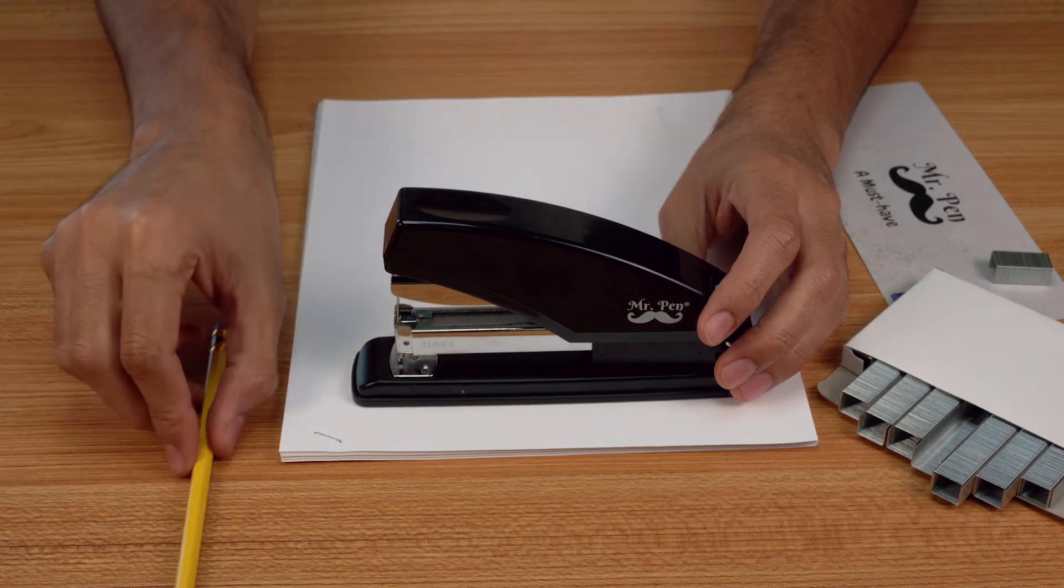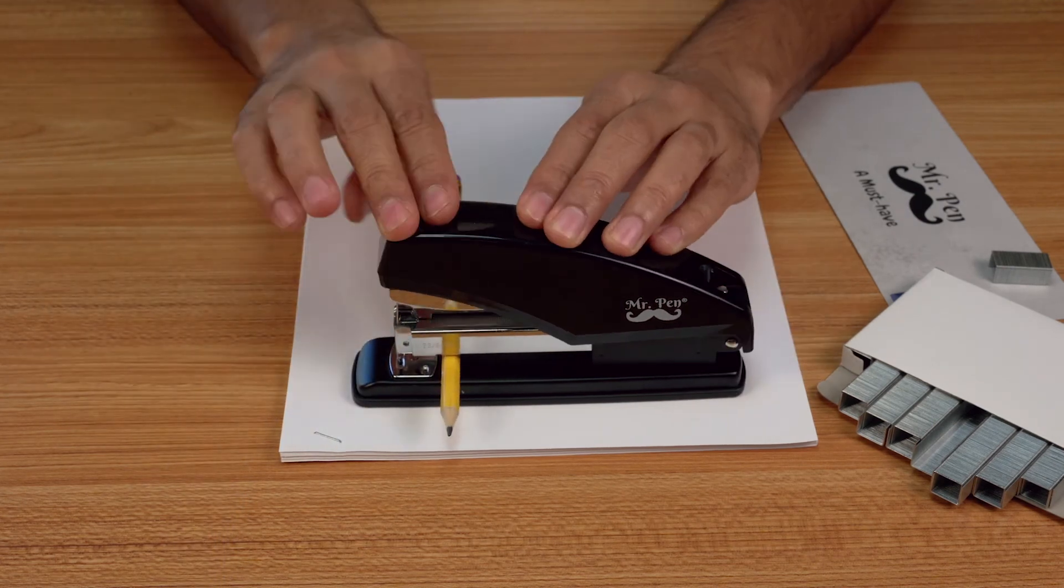If your stapler gets jammed, place a pencil under the metal part and push the handle down to unjam the stapler.